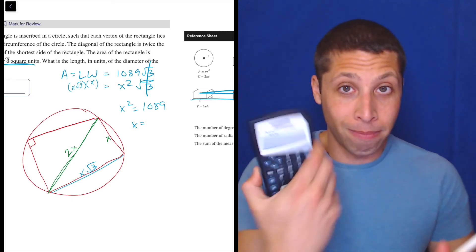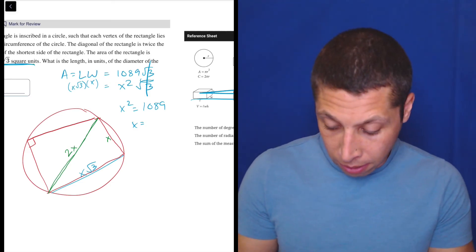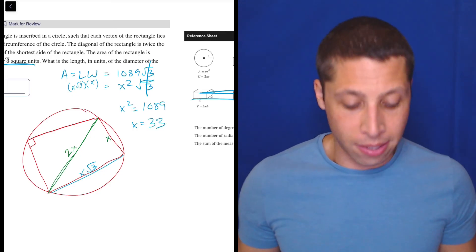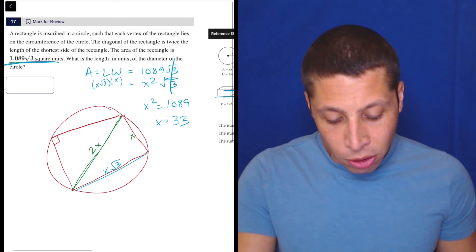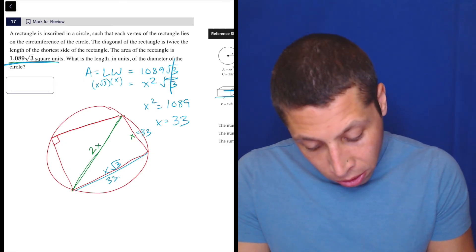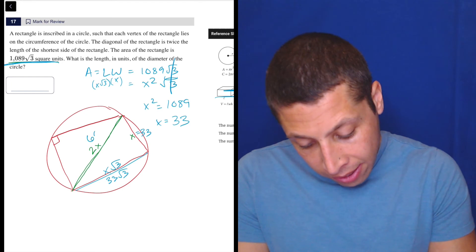So just take the square root of that. Let's see what we get. Square root of 1089 is 33. I love it when it's a nice number. And what that lets us do is fill in everything, right? So now we have that this here is 33. This here is 33 root 3. And this is 66.